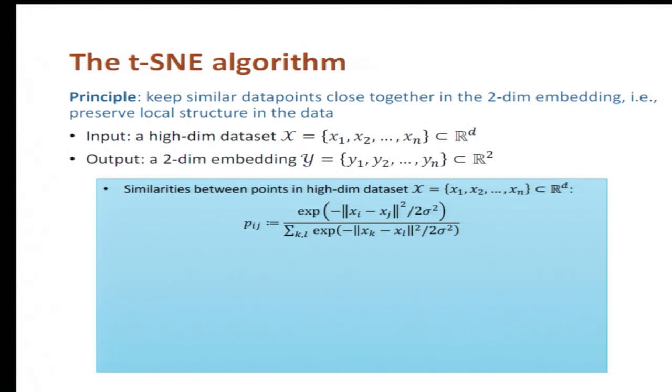And then we normalize the Pij's so that they sum to one. So basically this Pij is large if Xi and Xj are close to each other, and it's going to be very tiny if they are far away from each other.